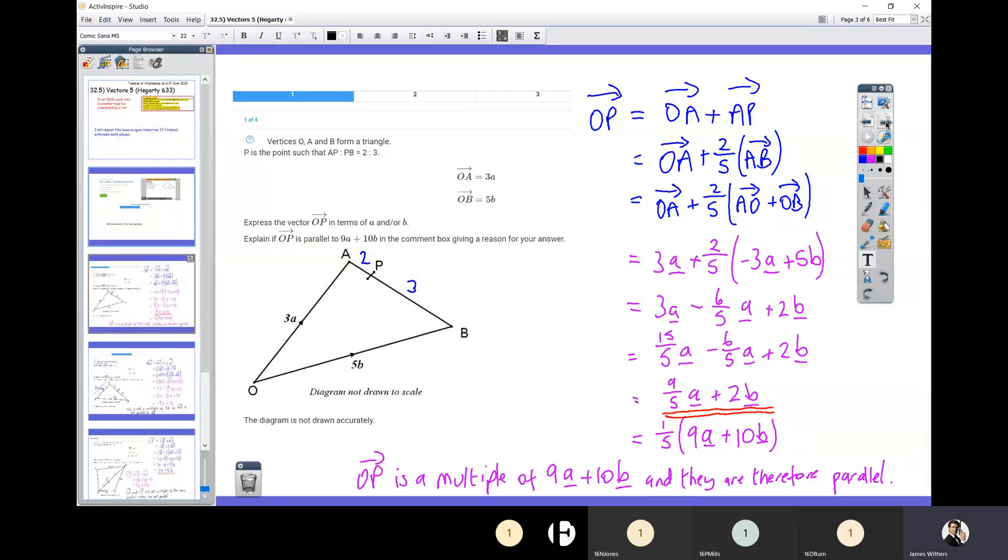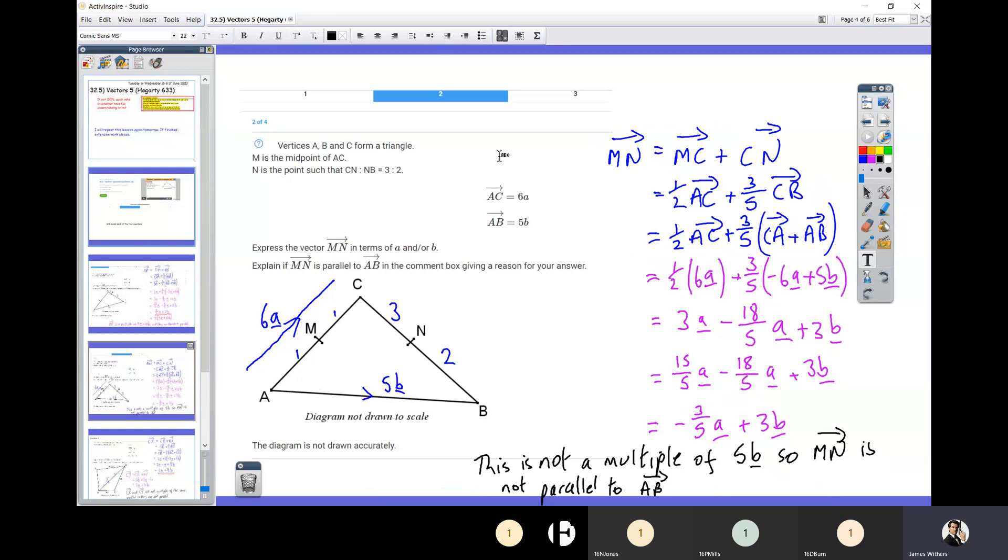So that's question one. Now question two is very similar; it's just they don't actually tell you in the question what you need to be parallel to in terms of little a's and little b's—you've got to pick it up from the diagram. So explain if MN is parallel to AB. Well, AB is 5b—the question tells me that AB is 5b. So I've got to go and work out MN, and as long as it's just a multiple of b then it is parallel, because 5b is parallel to 4b is parallel to 12b, is parallel to a tenth of a b. So I just now need to go and work out what MN is and see whether it is just a multiple of b, because I'm trying to see if it's parallel to AB.